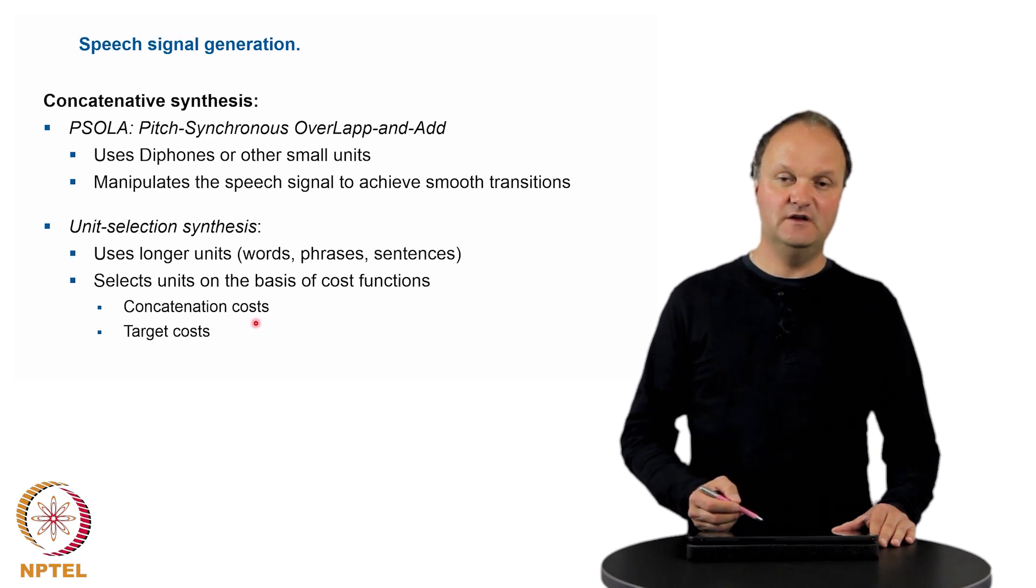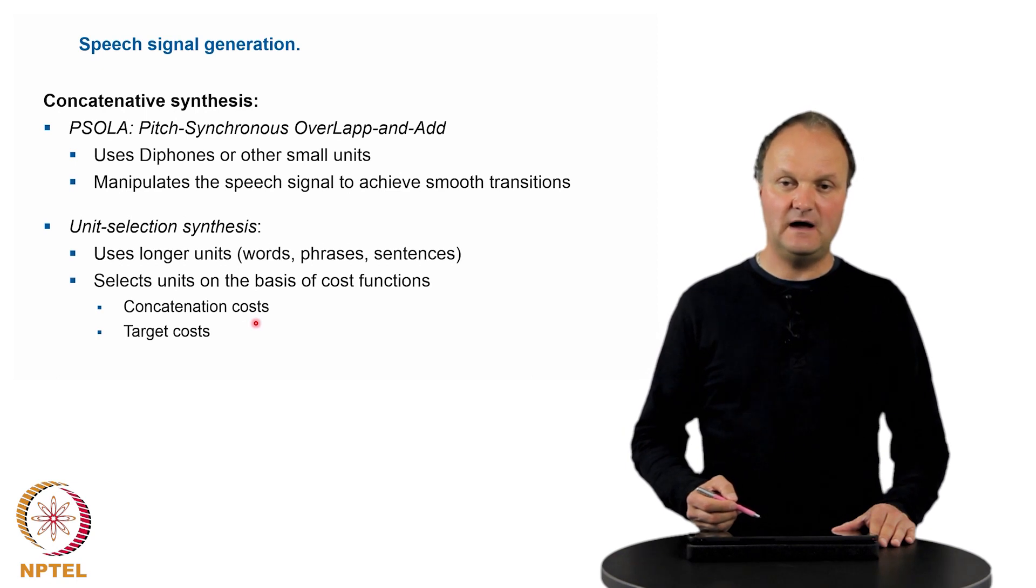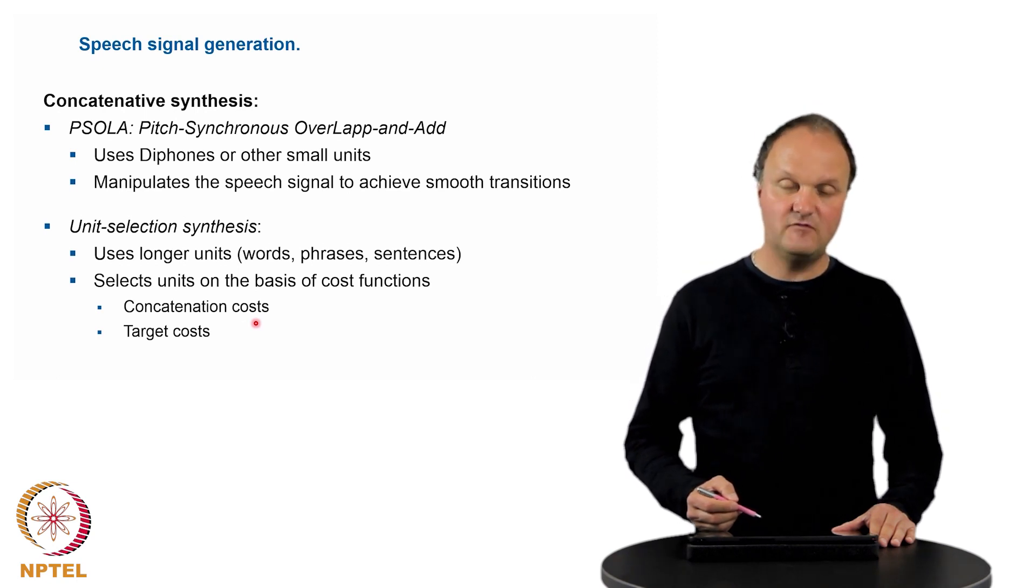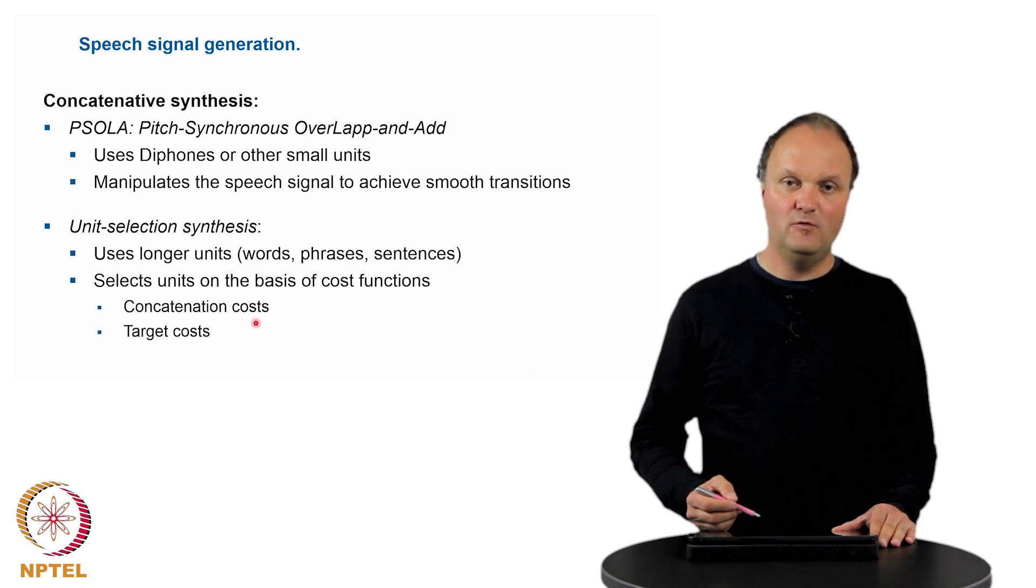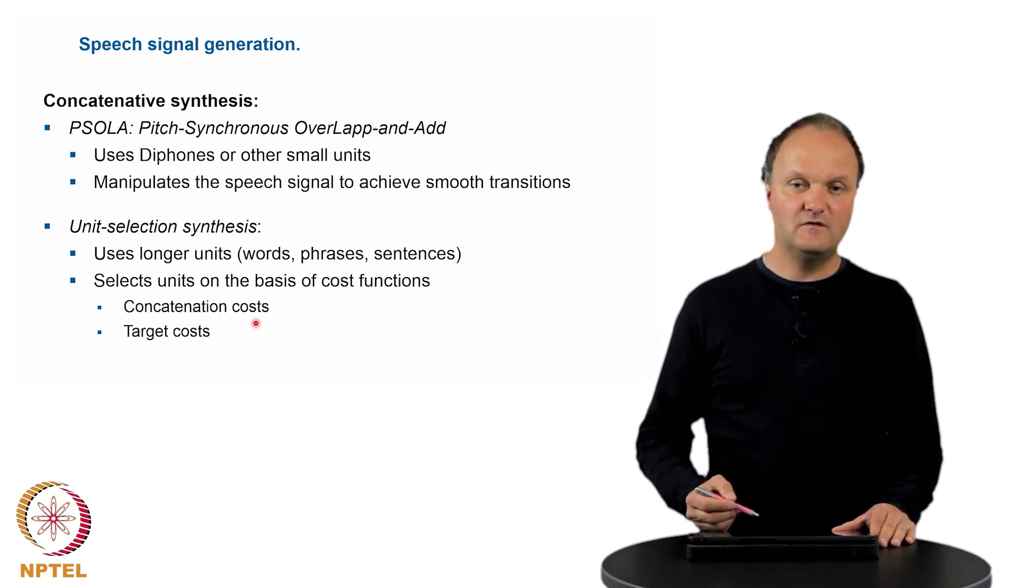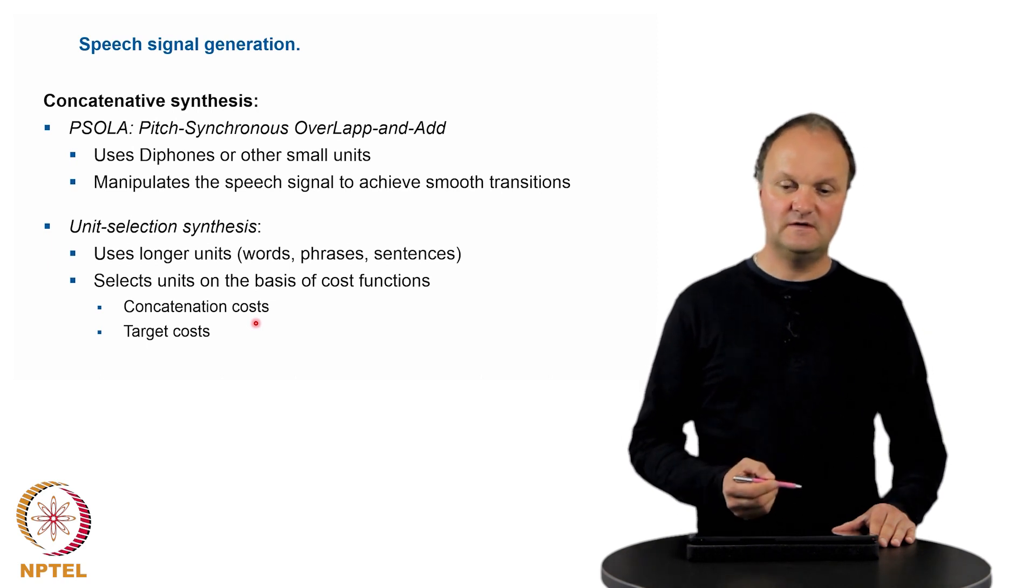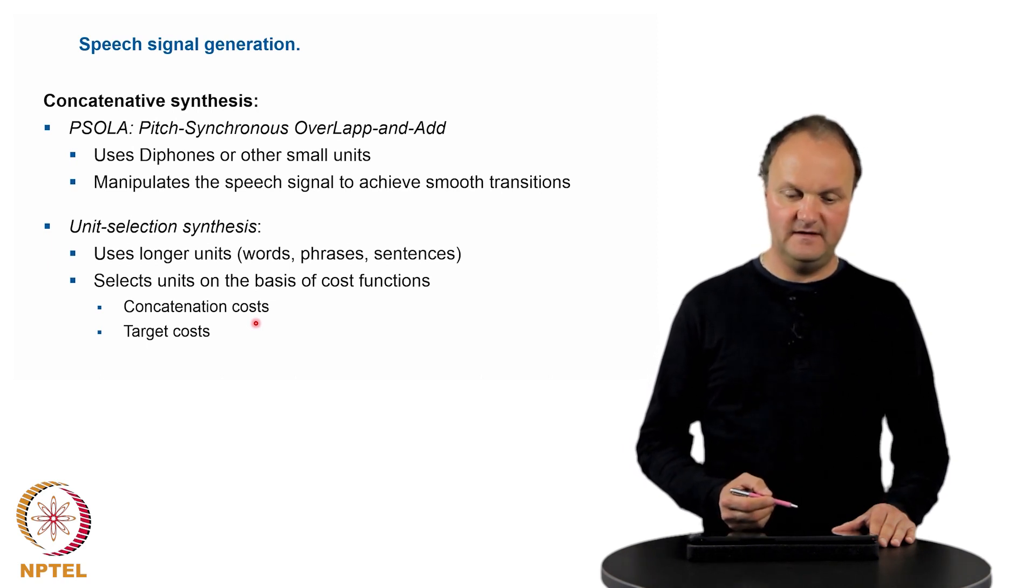The quality which can be achieved by this unit selection principle can be relatively high in case that the units which are in the inventory of the synthesizer fit well to the units which need to be used in order to produce the text which is desired.